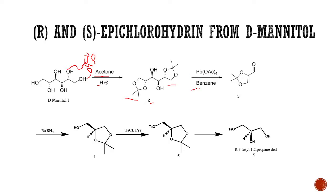It will break over here and we get two moles of this type of protected form of glyceraldehyde. So we get aldehyde compound number 3.